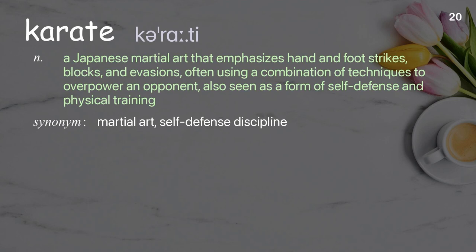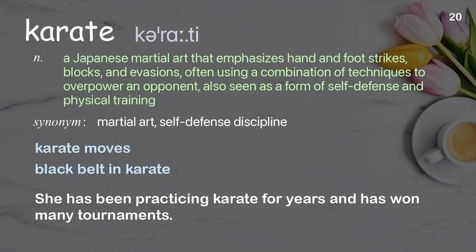Karate. A Japanese martial art that emphasizes hand and foot strikes, blocks, and evasions, often using a combination of techniques to overpower an opponent, also seen as a form of self-defense and physical training. Examples: karate moves, black belt in karate. She has been practicing karate for years and has won many tournaments.